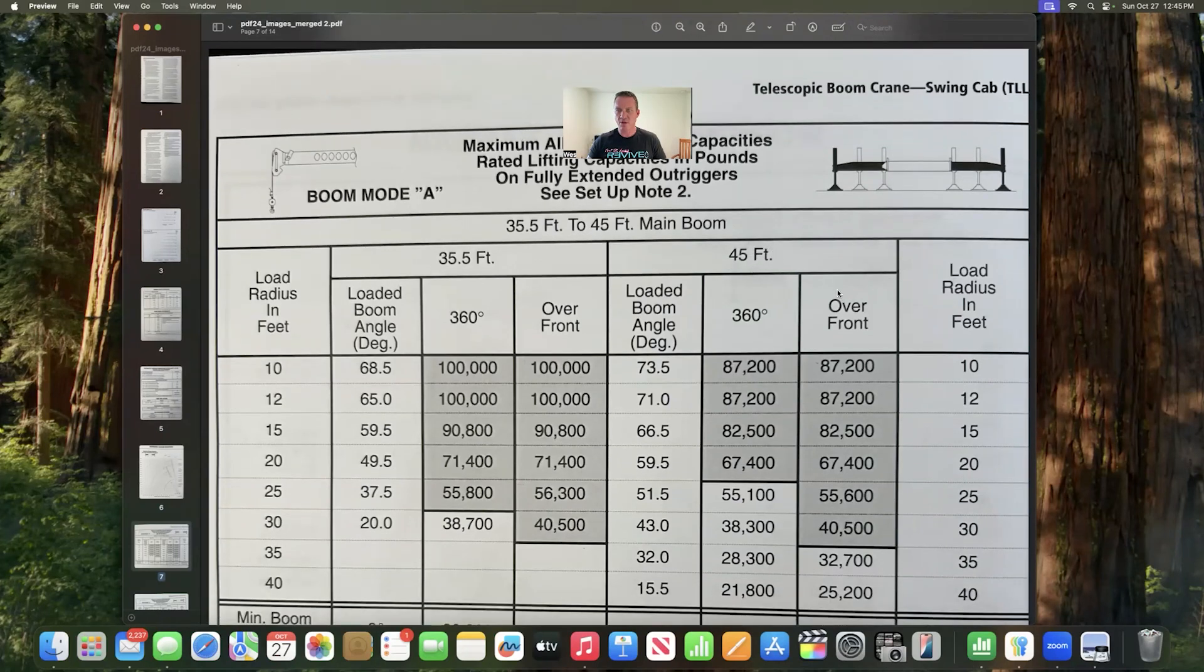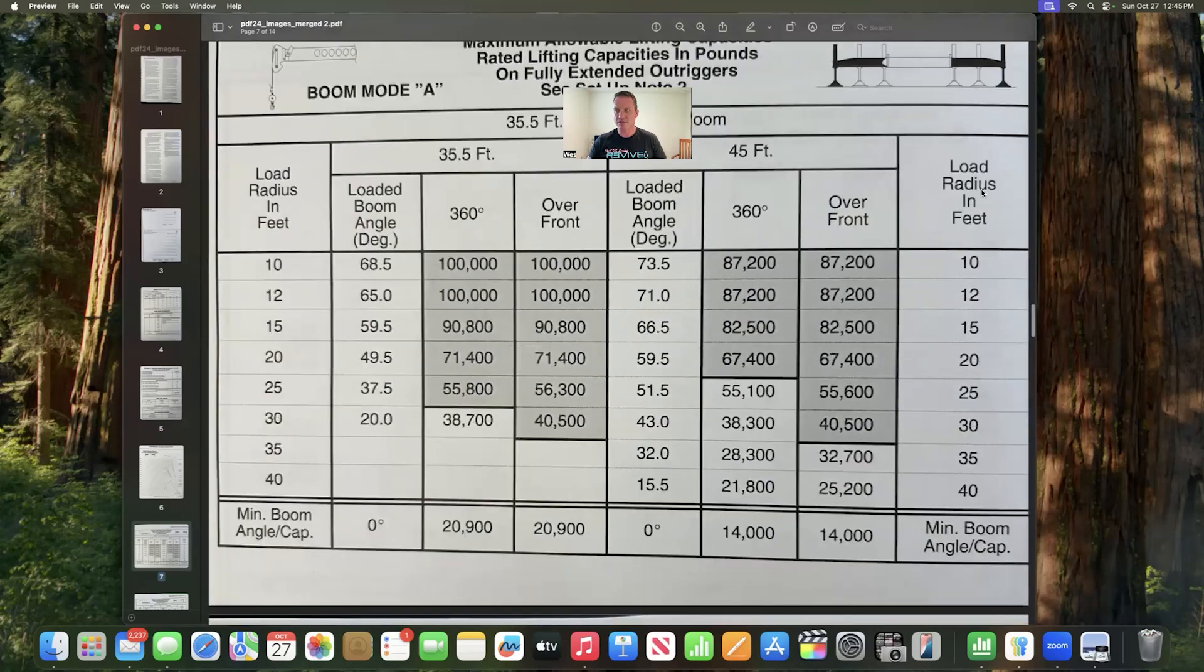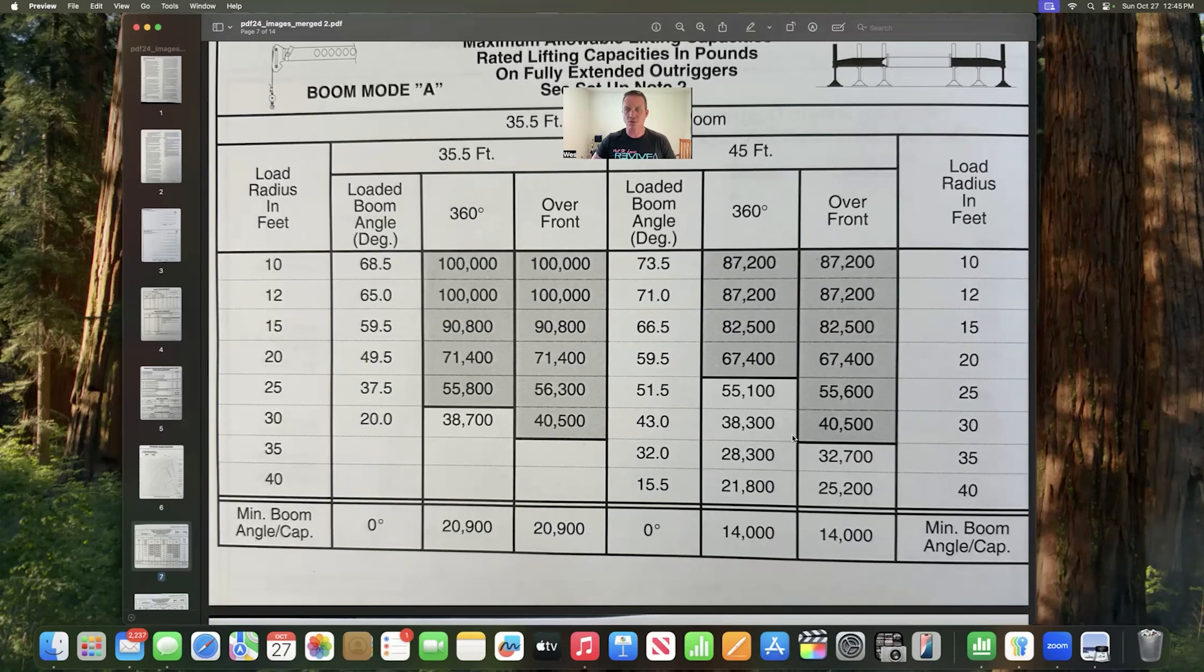So we go to 45 feet and the question was over the front. We're going to look at our chart here in this row for over the front, and then we're going to go down to load radius in feet. So we want 30 feet over the front, and that gives us 40,500. That is our gross capacity.